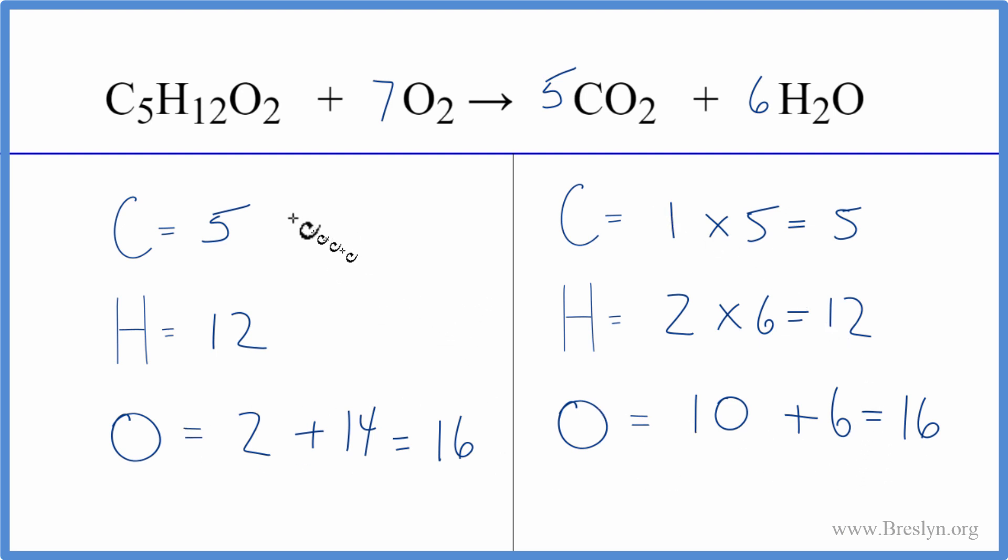This is the balanced equation for C5H12O2 plus O2, oxygen gas. So the strategy here, count all your atoms up, but then when you're balancing, leave the oxygens till last. And that's because the oxygen is by itself here, so it should be pretty easy to fix.